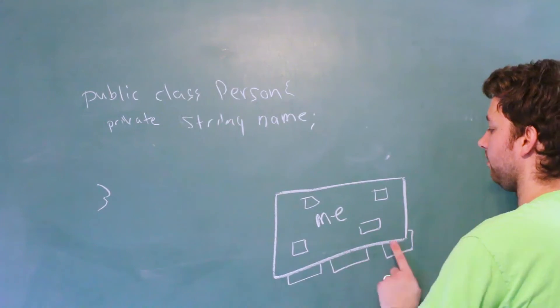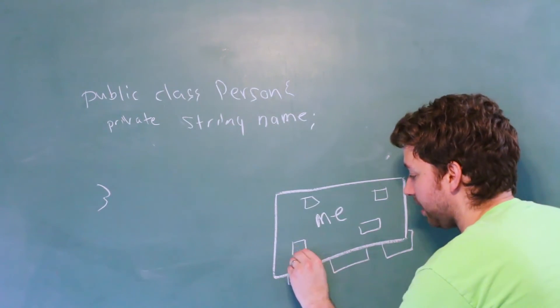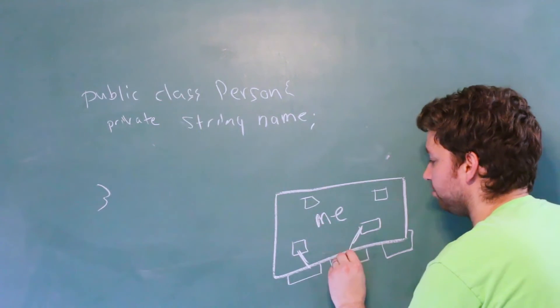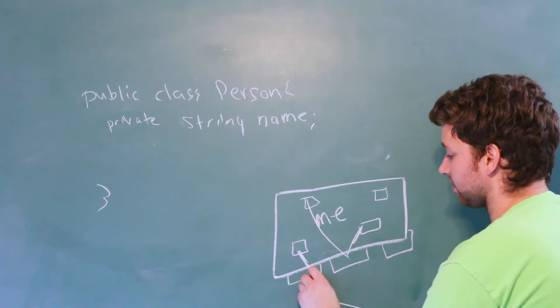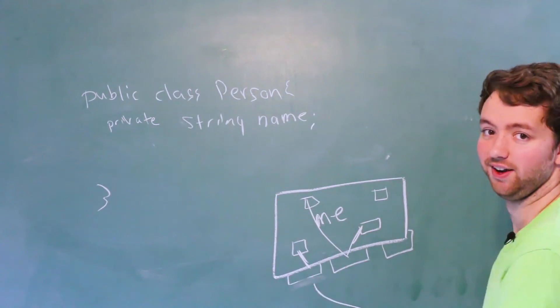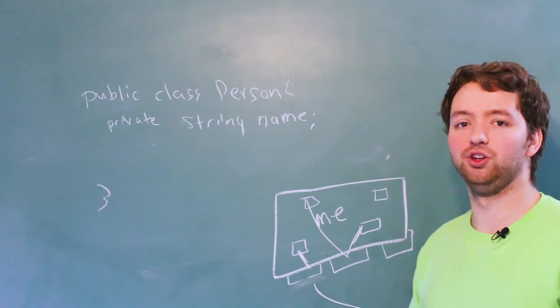but we can somehow do that through these other methods, which for example, the getters and setters would do. So we can access this one from right here. This is getting very theoretical, so maybe I'm getting a little bit too far.